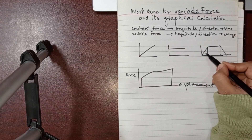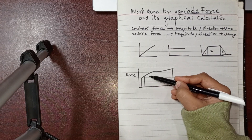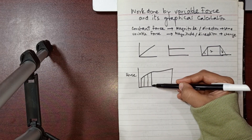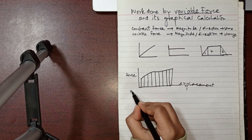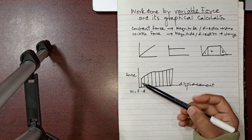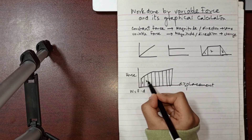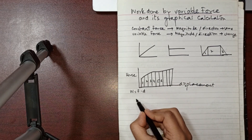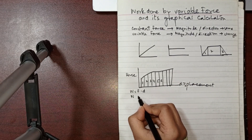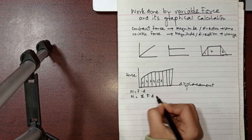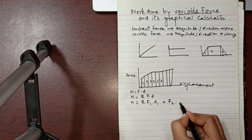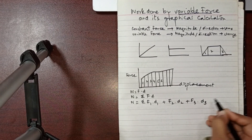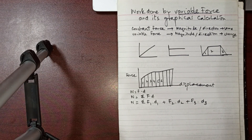For a variable force graph, we segment it — divide the area under the curve into rectangles: 1, 2, 3, 4, 5, 6, 7, 8, and so on. For each rectangle we apply W = F × d, and total work equals the summation of all segments: W = F₁d₁ + F₂d₂ + F₃d₃ + ...